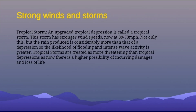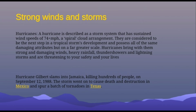Following a depression, you have a tropical storm — an upgraded tropical depression. This storm has stronger wind speeds, and the rain produced is considerably more than that of a depression, so the likelihood of flooding and intense wave activity is greater. They are treated as more threatening than tropical depressions, as there's a higher possibility of incurring damages and loss of life — roofs blow away, trees blow down, we have waves, flooding, and a lot of water.